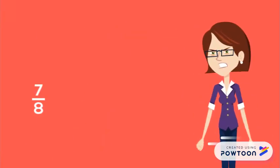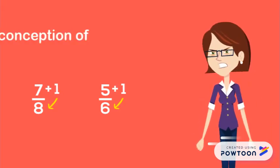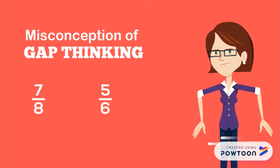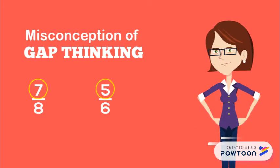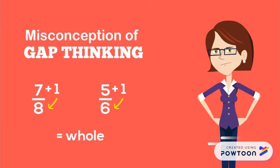If someone incorrectly thinks that both of these fractions are the same because they are only one number away from the whole, they are using the misconception of gap thinking. They think that the numerator is a whole number and you only need to add one more to the numerator to make a whole so that the numerator and denominator are the same.